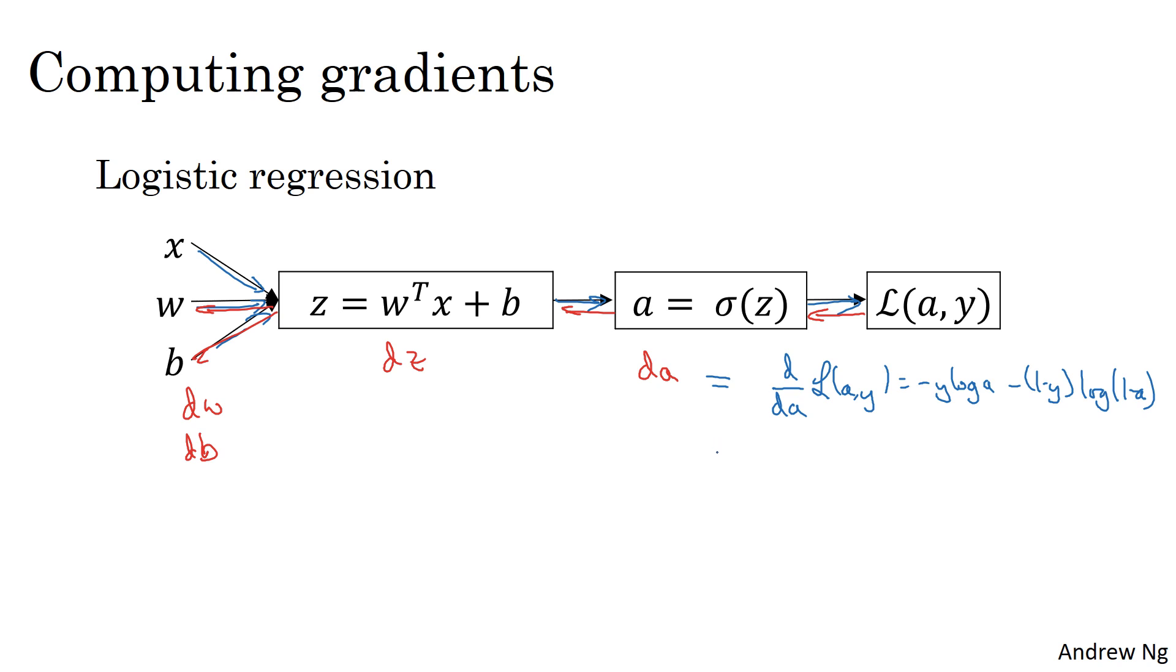So da is equal to that, and if you actually figure out the calculus, you can show that this is negative y over a plus (1 minus y) over (1 minus a). Let me just derive that from calculus by taking derivatives of this.